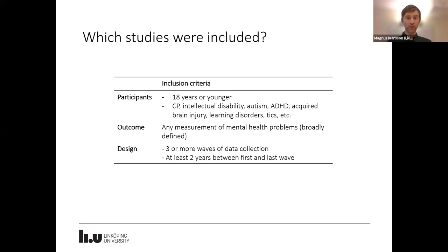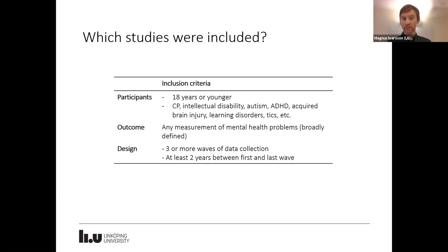Which studies were we looking for? We were looking for studies with participants age 18 or younger. We had a rather broad scope of different diagnoses, including cerebral palsy, intellectual disability, autism, and so forth — basically any developmental disability, as well as brain injury. We also had a broad definition of outcomes: any measurement that in some way tapped into mental health problems. For design, we required at least three waves of data collection and a minimum of two years between the first and last data collection points.